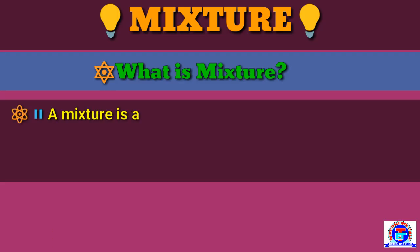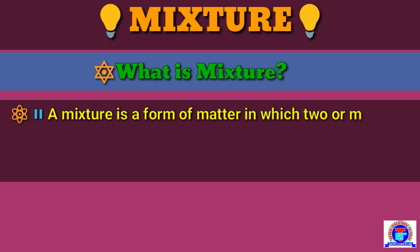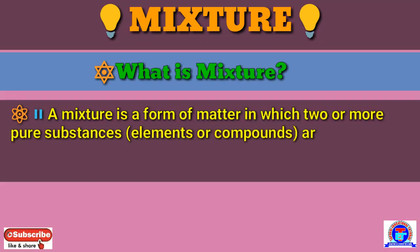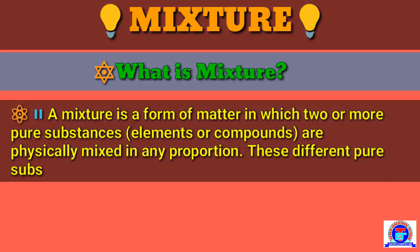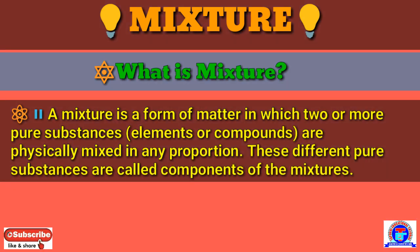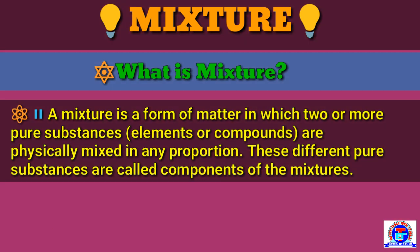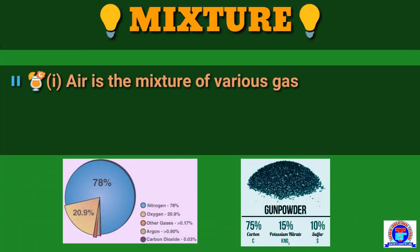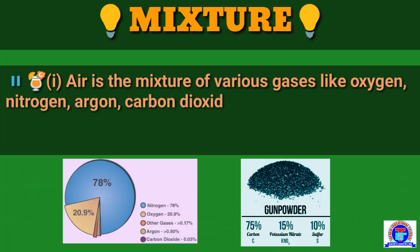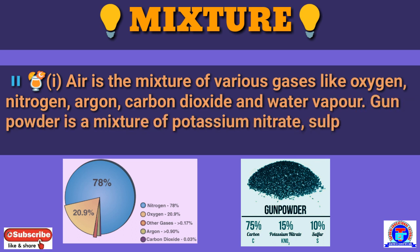A mixture is a form of matter in which two or more pure substances, like elements or compounds, are physically mixed in any proportion. These different pure substances are called components of the mixture. Some examples of mixture are given below. Number 1: air is a mixture of various gases like oxygen, nitrogen, argon, carbon dioxide and water vapor.